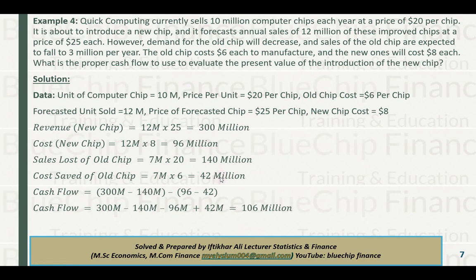When old chip sales are lost, those production costs are also saved. Cash flow: 300 million new revenue minus 140 million lost old revenue, minus 96 million new costs, plus 42 million saved old costs. Opening the brackets: 300 minus 140 minus 96 plus 42 equals 106 million. Cash flow is 106 million.